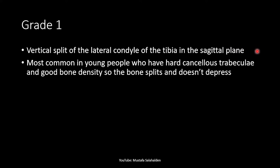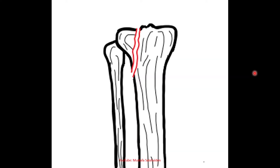Grade 1 is a vertical split of the lateral tibial plateau in the sagittal plane. It is most common in young people who have hard cancellous trabeculae and good bone density, so the bone splits and doesn't depress. As shown in the drawing, the split fracture is lateral to the intercondylar eminence, extending as a vertical split through the lateral plateau.